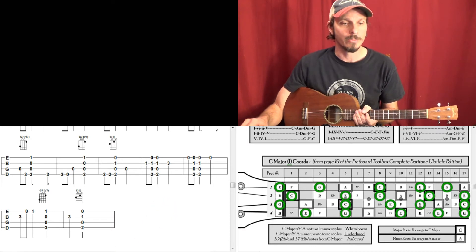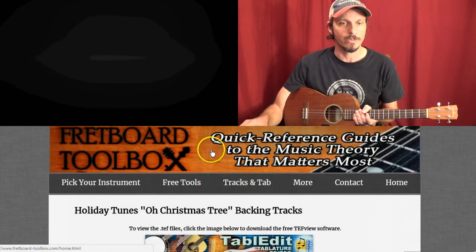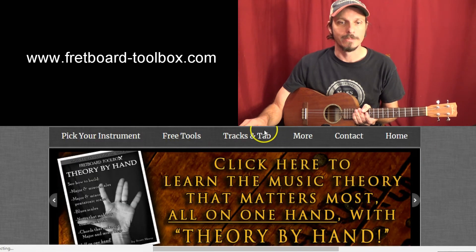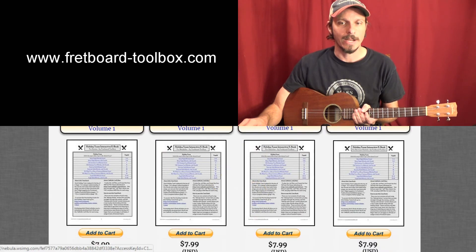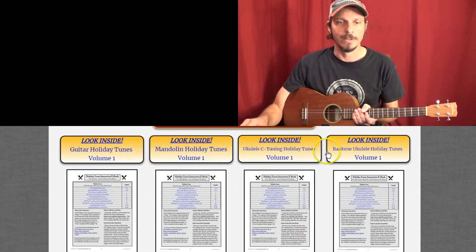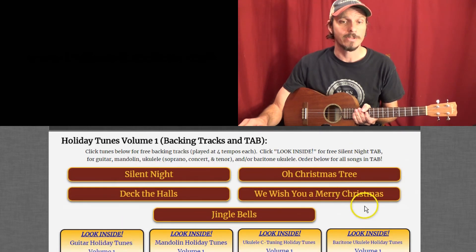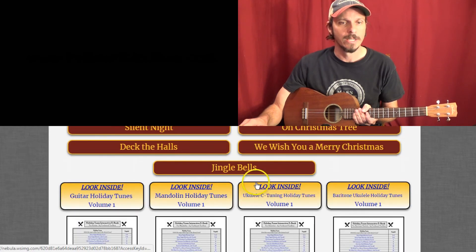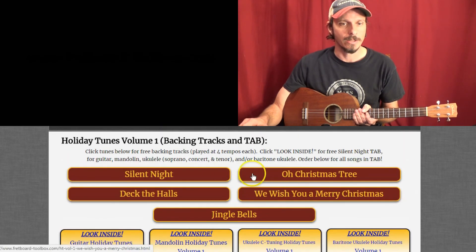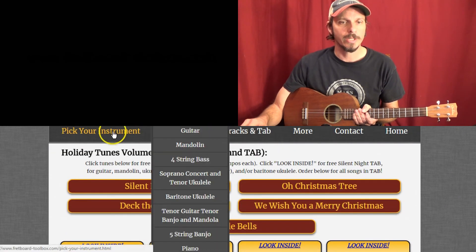If you want to pick up your own holiday tunes book, you go to the fretboard toolbox website and go to tracks and tab, go to holiday tunes, and then you can order them. I've got tabs for guitar, mandolin, ukulele, baritone ukulele for all five songs. You can order those as ebooks and they'll come to you right away and you can download those immediately.